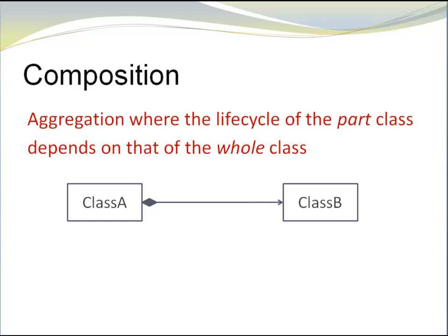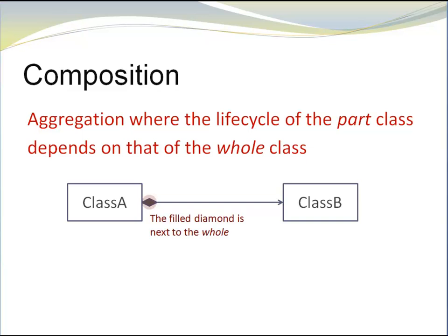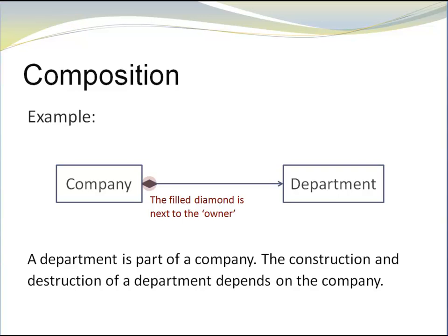Now let's look at composition. Compositions are aggregations where the life cycle of the part class depends on that of the whole class. That means the construction and destruction of the part depends on the whole. Here we have the filled diamond and again the diamond is next to the class that represents the whole. Here is an example. We have a company and we have a department. The department is part of the company. Also, the construction and destruction of the department depends on the company. That means the department can only exist in the context of the company. We can't have a department if we don't have a company.